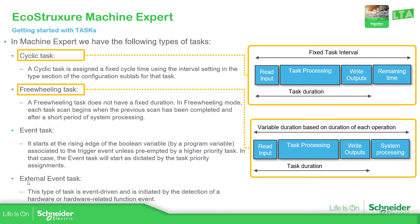We have the event task and external event task. Event tasks are executed by Boolean variables from variables inside our program. External event tasks are triggered by something related to external hardware that can execute a task. In the task, of course, we're going to have the POUs.